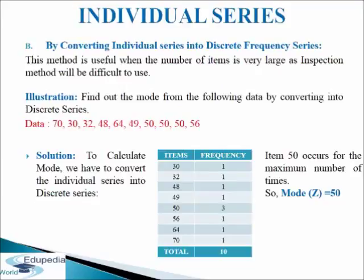Next we come to calculating mode by converting individual series into discrete frequency series. This method is useful when the number of items is very large, as the inspection method will be difficult to use. In such cases, individual series are first converted into discrete frequency series. The value that has the highest frequency in the series is identified as mode. We have to find mode from the following data: 70, 30, 32, and so on.